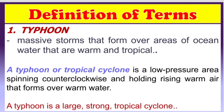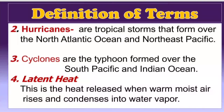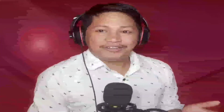Now for our definition of terms. First, a typhoon is a massive storm that forms over areas of warm tropical ocean water. A typhoon or tropical cyclone is a low-pressure area spinning counterclockwise, holding rising warm air that forms over warm water. Second, a hurricane forms over the north Atlantic Ocean and northeast Pacific. Third, a cyclone forms over the south Pacific and Indian Ocean. Lastly, latent heat is the heat released when warm moist air rises and condenses into water vapor.